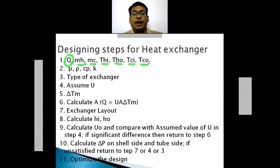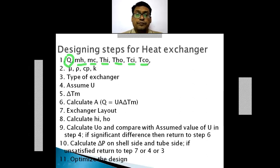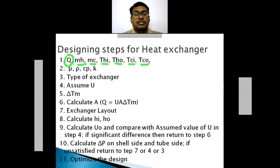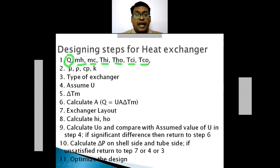Next is to select the type of heat exchanger — whether it is a shell and tube exchanger, a plate type heat exchanger, or a spiral type heat exchanger. With a little modification we can change this designing procedure, but the basic steps are the same. Then, assume the overall heat transfer coefficient U, based on specific numerical values provided in the literature by different authors, drawing on the past experience of different people.